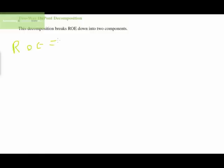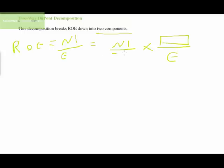Let's start with the two-way DuPont decomposition. This breaks return on equity into two components. Since ROE equals net income divided by equity, we insert 'assets' in both the numerator and denominator as a canceling term. The first ratio — net income over assets — is return on assets, and the second — assets over equity — represents the degree of financial leverage.